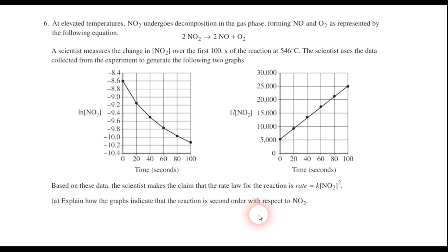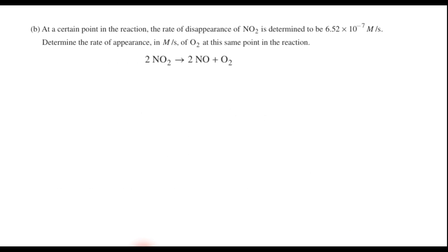So how do the graphs indicate that? Well, the key is to focus on the graph that's a straight line, so that's the second graph right here. And since the graph of one over the concentration of NO2 versus time is a straight line, that tells us that the reaction must be second order with respect to that reactant. Now likewise, if the natural log of the concentration versus time had been a straight line, then it would have been first order. But of course, it's not. So if you got that question right, you can give yourself the point.